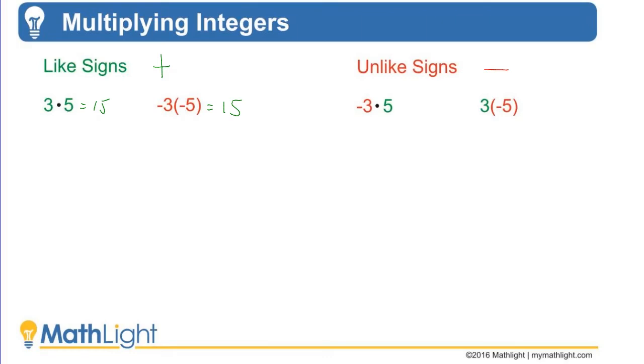So a negative 3 times a positive 5 is a negative 15, and for the same reason, a positive 3 times a negative 5 is a negative 15. Multiplying integers, it's easy. You can do it and you can be proficient at it.